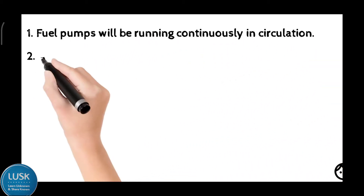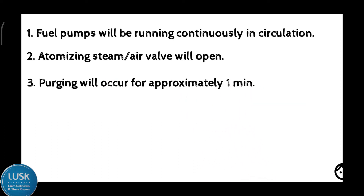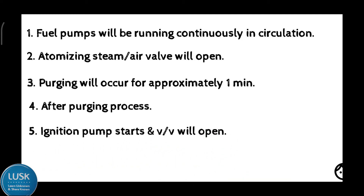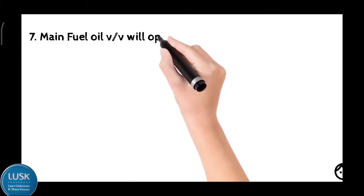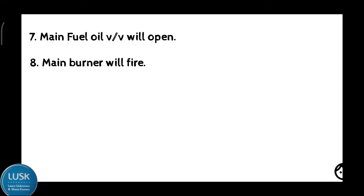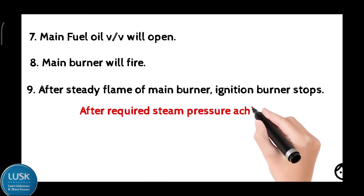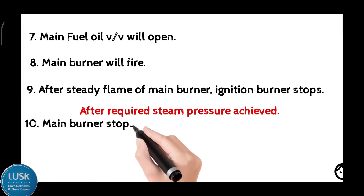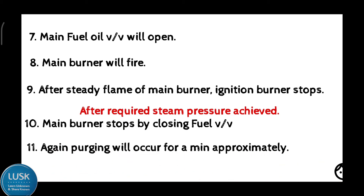First, fuel oil pumps will be running continuously. Then the atomizing steam valve will open, or compressed air valve will open for atomizing. Then purging will happen for one minute. After purging period completes, ignition burner pump will start and those two valves will open. Then pilot burner will start firing. There will be a flame sensor that will detect the flame inside the burner. Then main fuel oil valve will open, and main burner will start firing because of the pilot burner. The flame sensor will detect a steady flame. Then ignition burner will stop. After achieving the required steam pressure, main burner will stop by closing the fuel valve, and purging will occur.